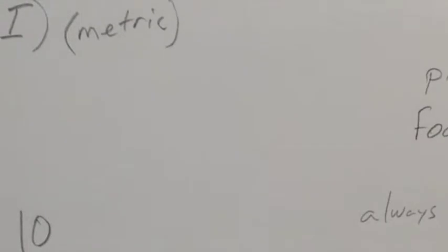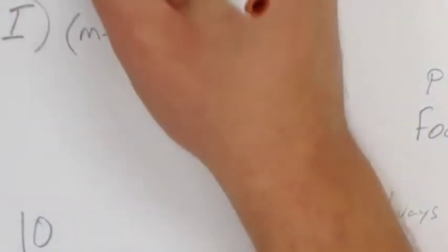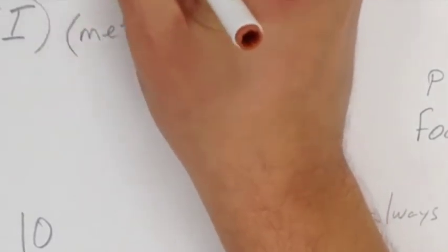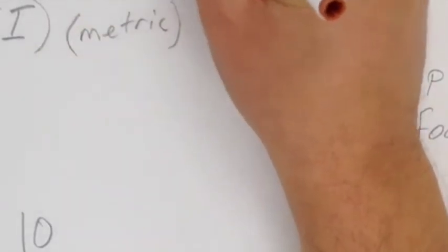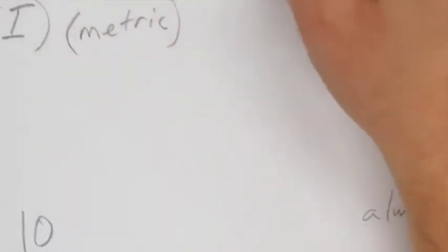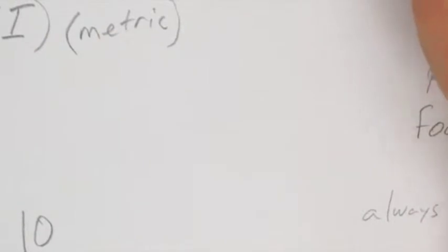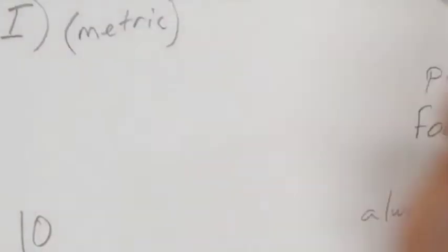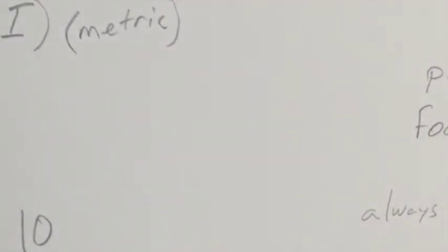In understanding different systems of measurement, the first important point is that there are two systems of measurement, and they have different units in each. Without doing math, we can't go back and forth between the two.